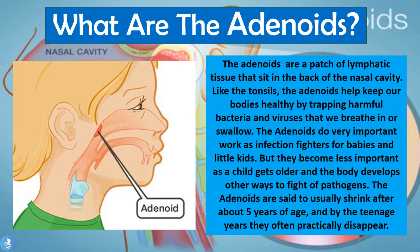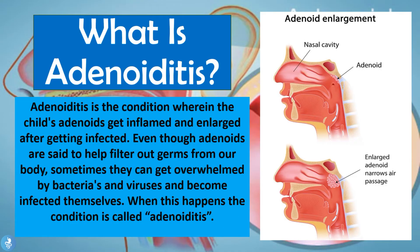Now that we know what the adenoids are, let's take a closer look at what is adenoiditis. Adenoiditis is the condition wherein a child's adenoids get inflamed and enlarged after getting infected. Even though the adenoids help filter germs from our body, sometimes they can get overwhelmed by bacteria or viruses and become infected themselves. When this happens, the condition is called adenoiditis.